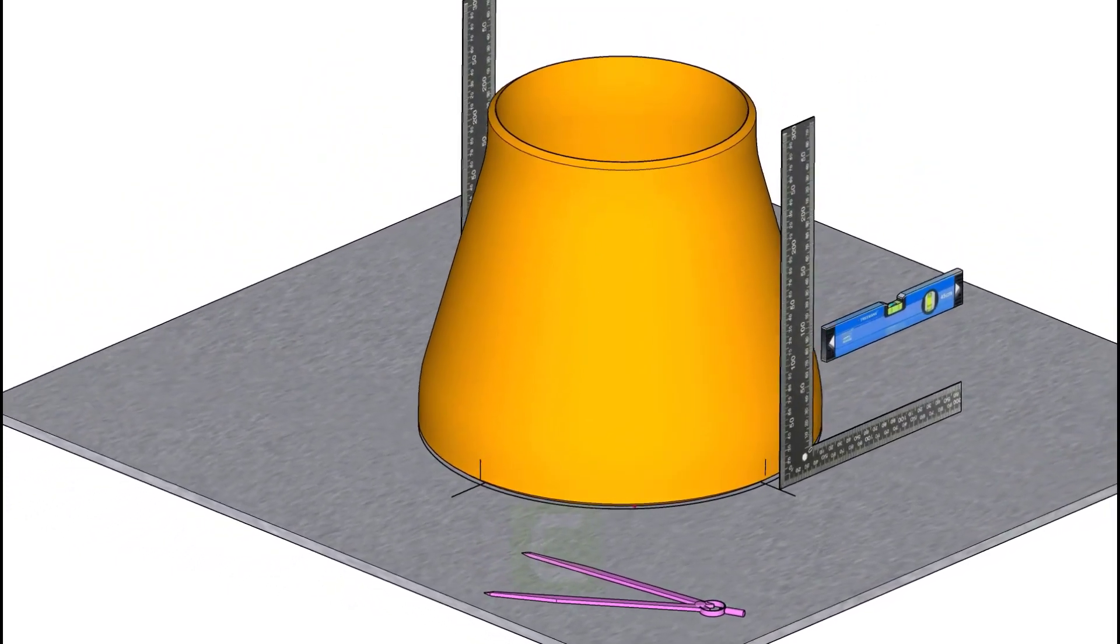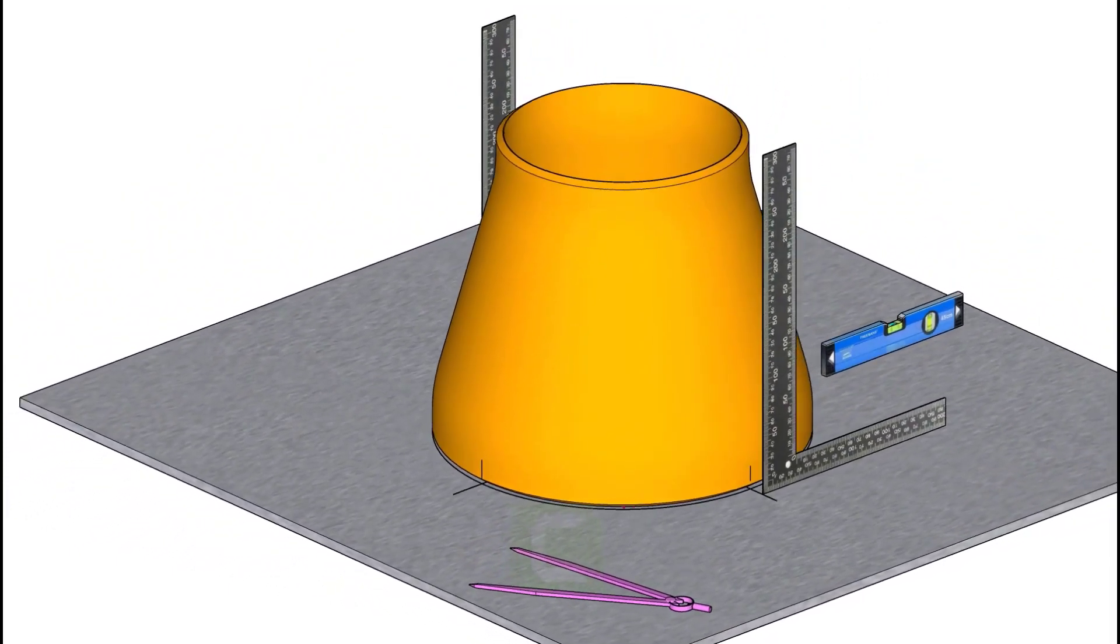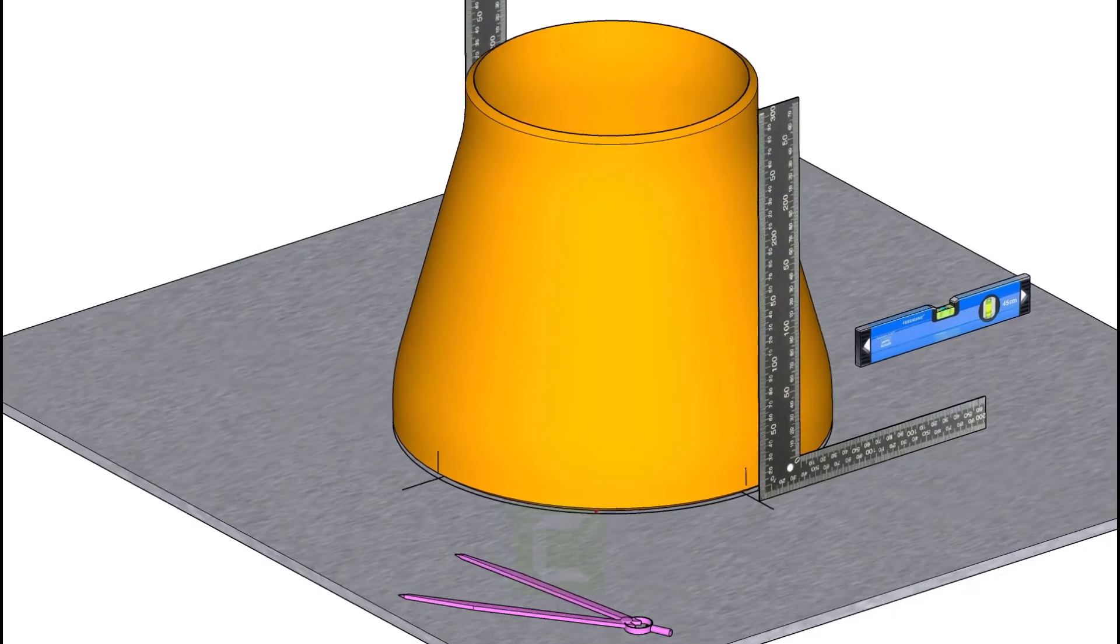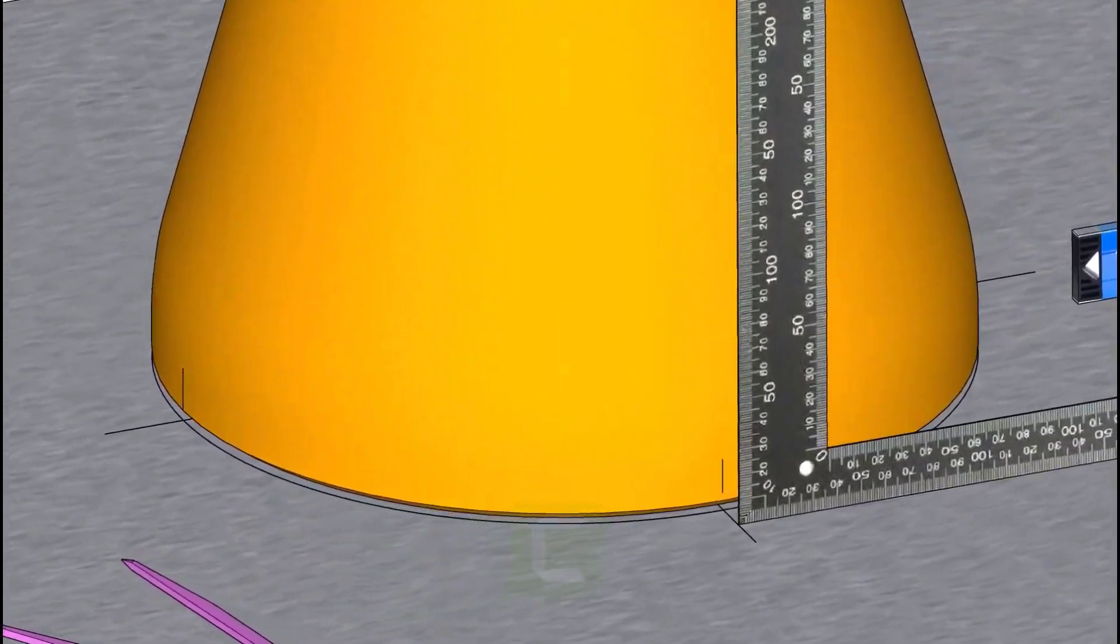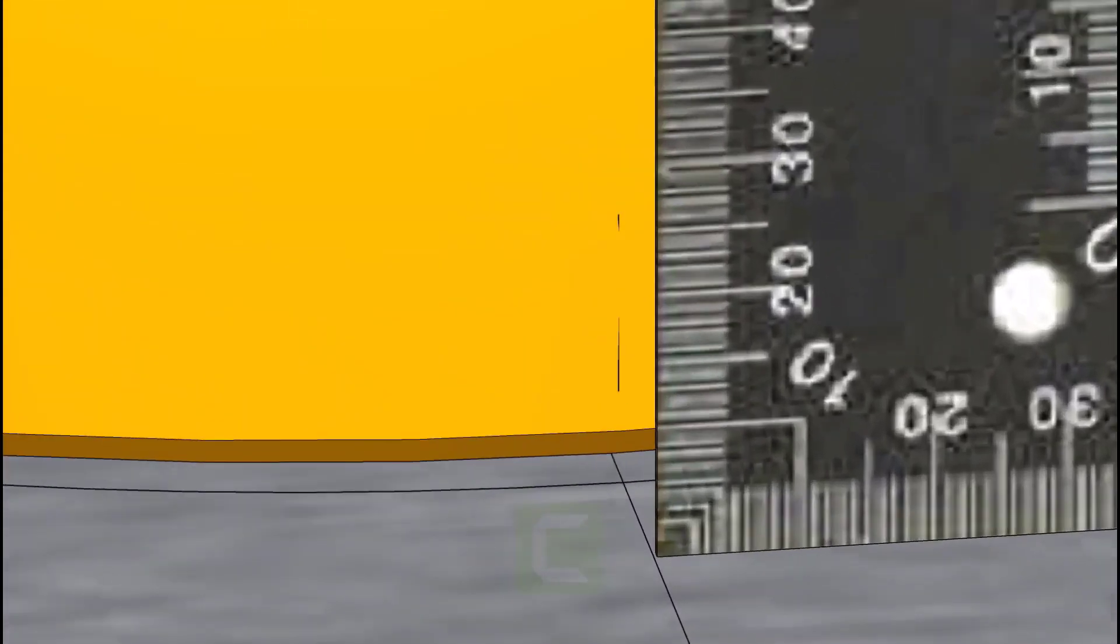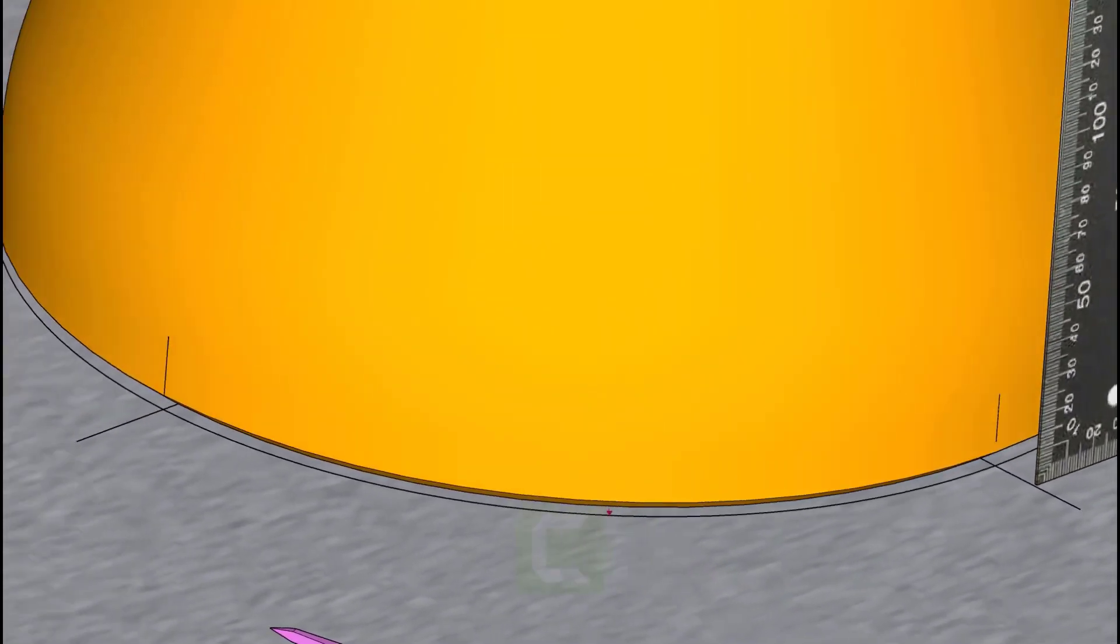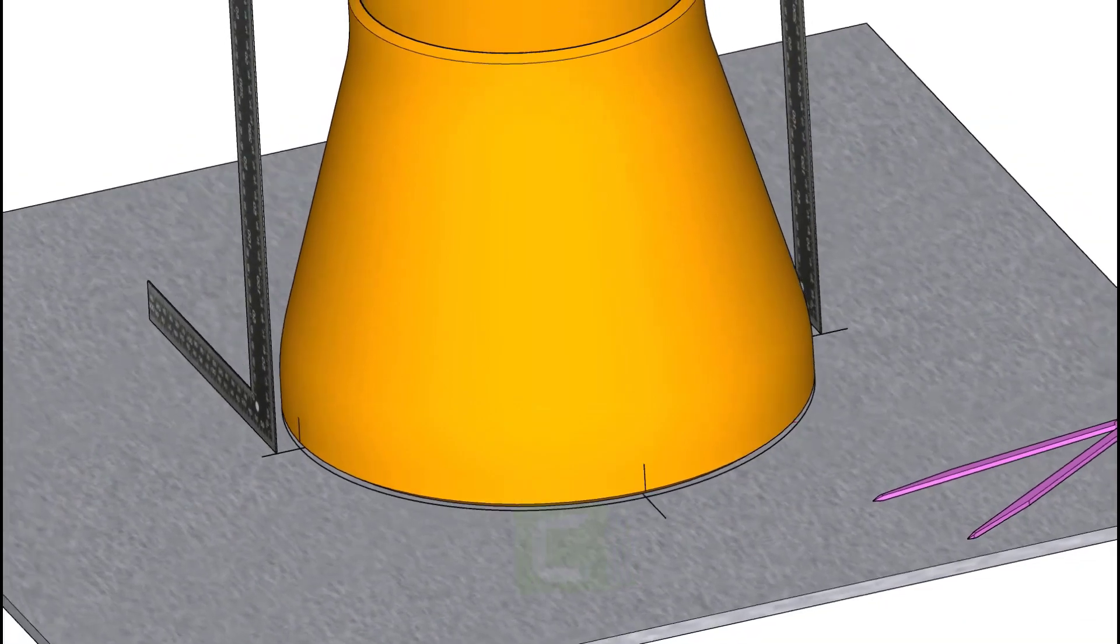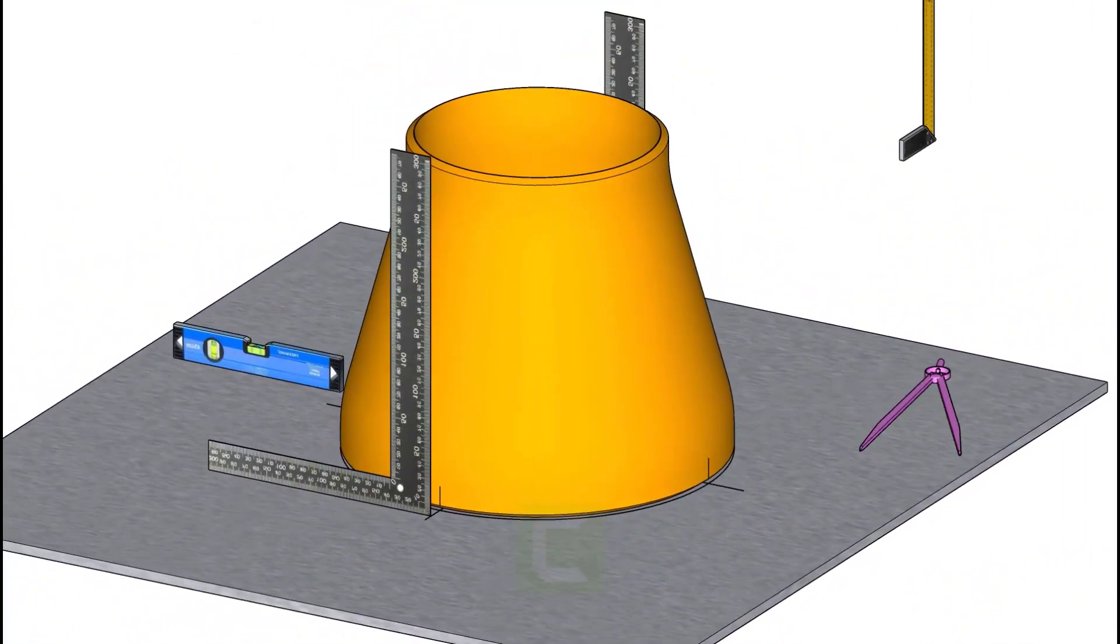Hold two large right angles on the centerline as shown. Put a straight edge or an aluminum box on the top of the reducer, touching both the right angle edge.